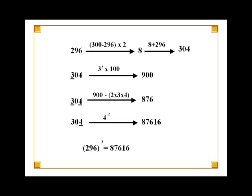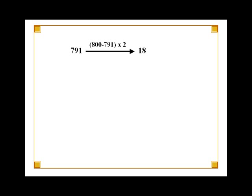I'll consider another example. Let's find the square of the number 791. As before, the first step is to obtain a 3-digit number with middle digit 0. So, we subtract 791 from 800 which is the multiple of 100 closest to 791. Subtracting 791 from 800 gives us 9. Now multiply 9 with 2 to get 18 and add 18 to 791 to obtain 809 as shown.